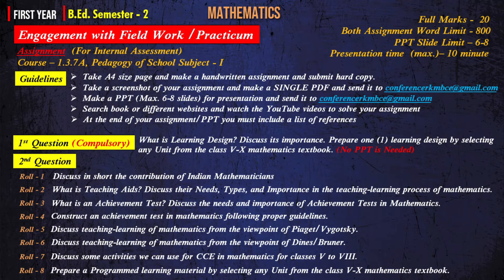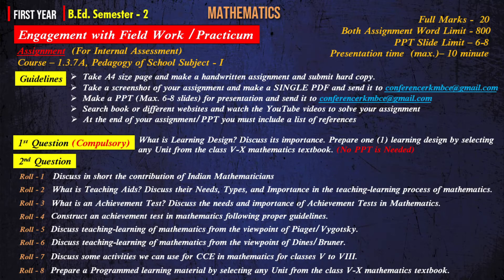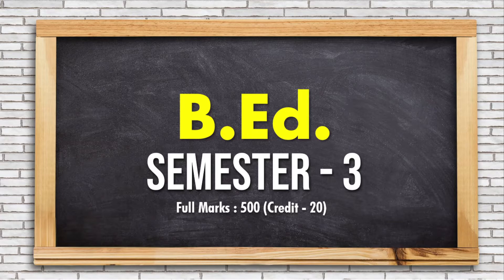The second assignment is roll-number-wise for the mathematics method class. Take an A4 size page, make a handwritten assignment, and submit a hard copy. Make a single PDF and send it to conferencerkmbc@gmail.com. Also make a PowerPoint presentation with maximum six to eight slides and send it to conferencerkmbc@gmail.com. Search books, websites, and YouTube videos. Include a list of references at the end. Both assignments have a word limit of 800, and the presentation time for the second assignment is maximum 10 minutes.